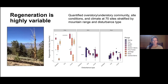We sampled the overstory and understory communities, characterized site and disturbance conditions, and evaluated climate and soil data at all of our sites. The figure on the right shows regeneration density for each species across different disturbance types on the x-axis. One thing to point out is the order of magnitude difference in whitebark pine regeneration — on the y-axis it's not a linear scale, so there's significantly higher whitebark regeneration. This variability among disturbance types and mountain ranges required further analysis to better tease apart the drivers of these patterns for each species.